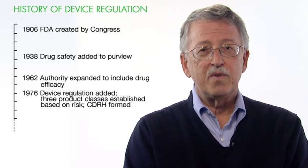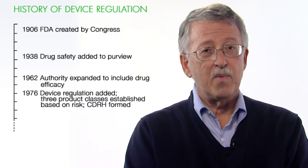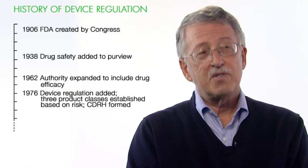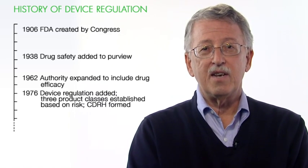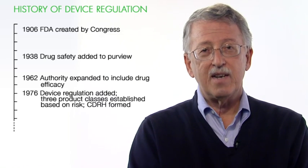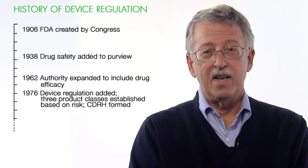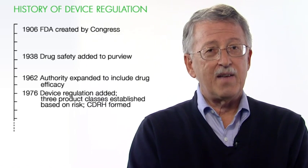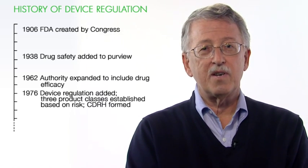Drugs required approval for safety before they could be marketed. But that proved also not to be quite enough, as in 1962, Congress again expanded FDA's authority over drugs to provide that drugs had to be found efficacious before they could be put on the market as well.